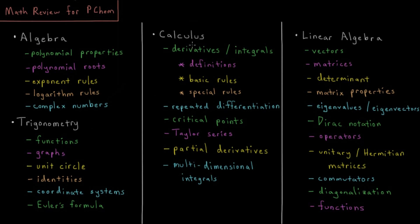Moving on to calculus: calculus is primarily composed of derivatives and integrals. In each case, it's important to understand conceptually what the definitions are, what the basic rules are for derivatives and integrals of basic functions like sine, cosine, exponential, and polynomial, and what the special rules are for combinations — like the product rule, chain rule, and quotient rule. Also covered are repeated derivatives like second and third derivatives, and how to find critical points such as maximum and minimum values of functions, which come up quite a bit.